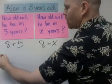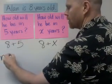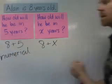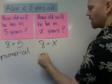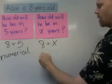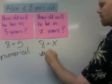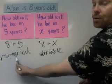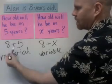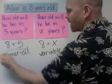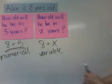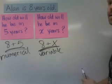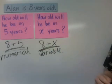This thing right here — eight plus five — is called a numerical expression, and eight plus x over here is called a variable expression. It's called a numerical expression because it has only numbers, eight and five. It's called a variable expression because it involves a variable — in this case, the variable is x.